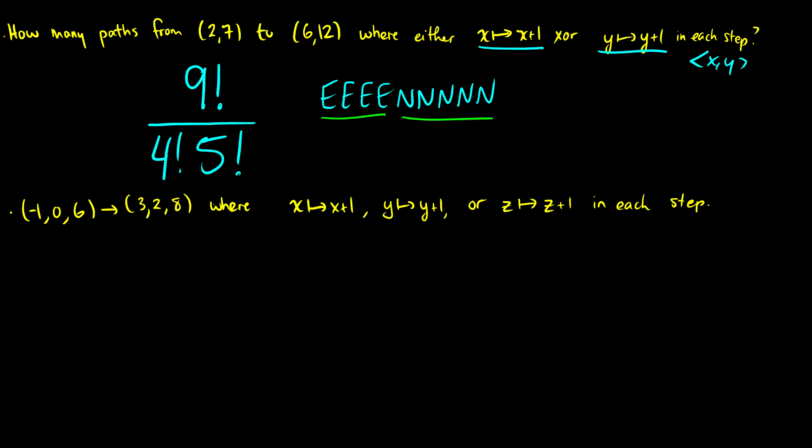That was a pretty easy path question. The next one is a similar concept, but instead of a two-dimensional grid we have a three-dimensional grid. For x, y, and z, we have to go from (-1, 0, 6) to (3, 2, 8), and we can move one in the x direction, one in the y, or one in the z.